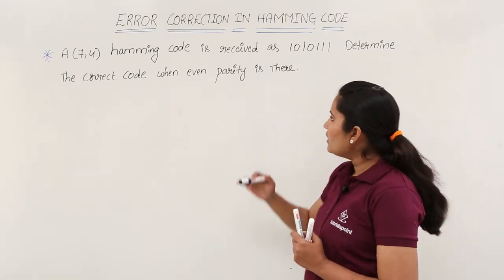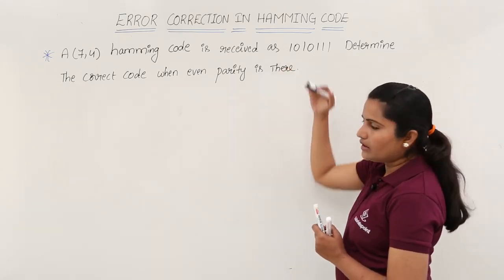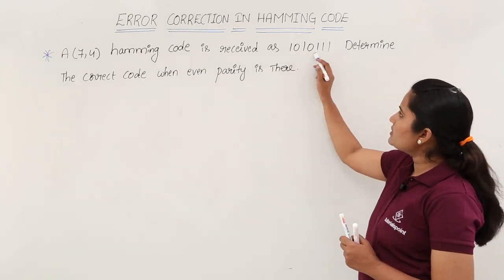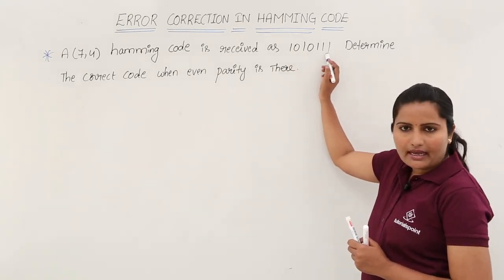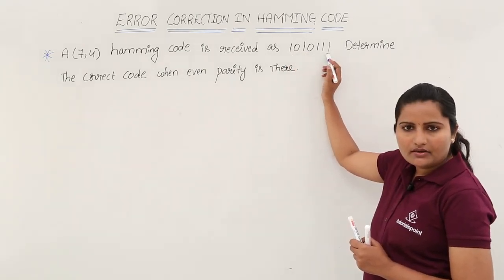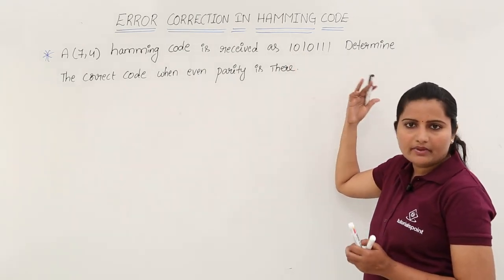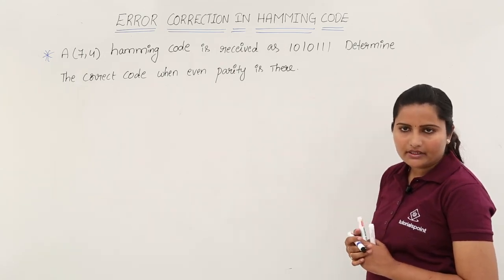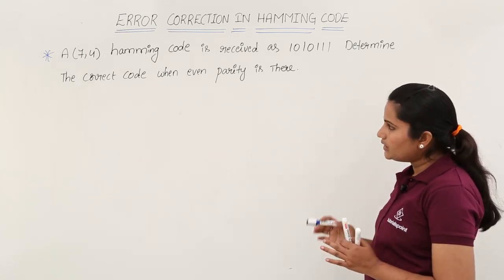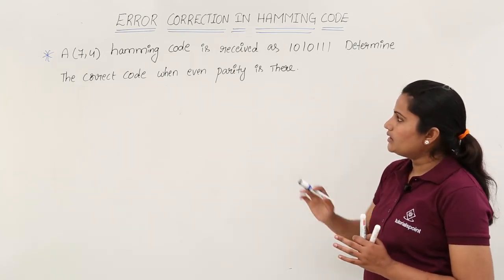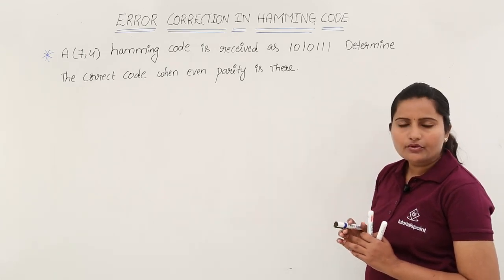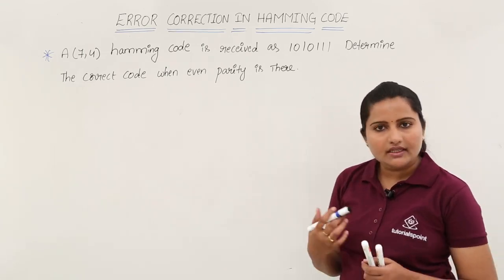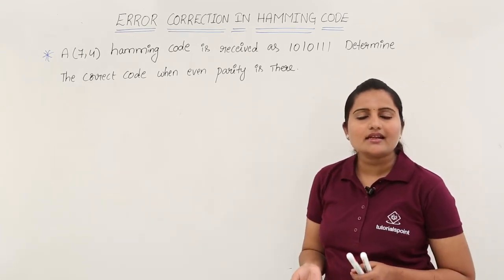When a Hamming code is given, you can treat this as a 7-bit Hamming code in which 4 bits may be the message bits. So the remaining bits are the parity bits. To correct that code, first you need to check whether there is an error or not.